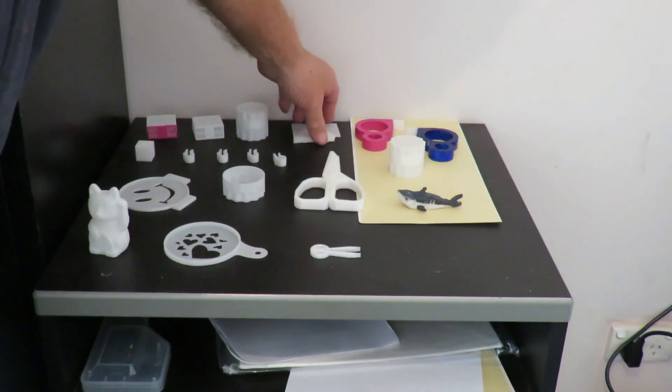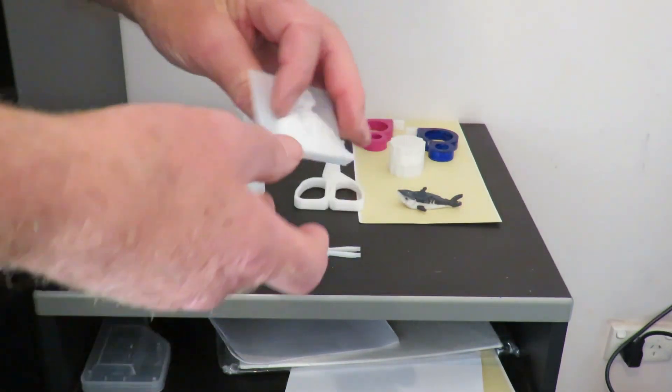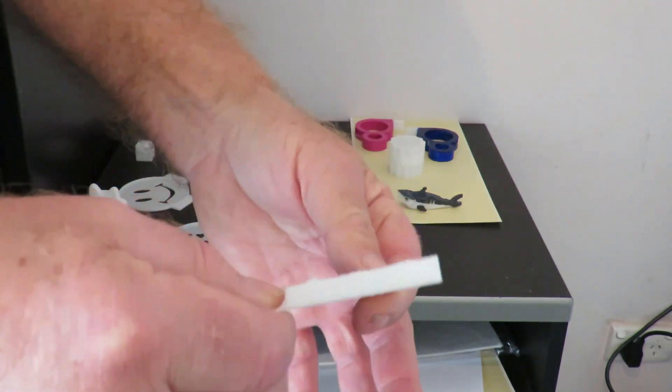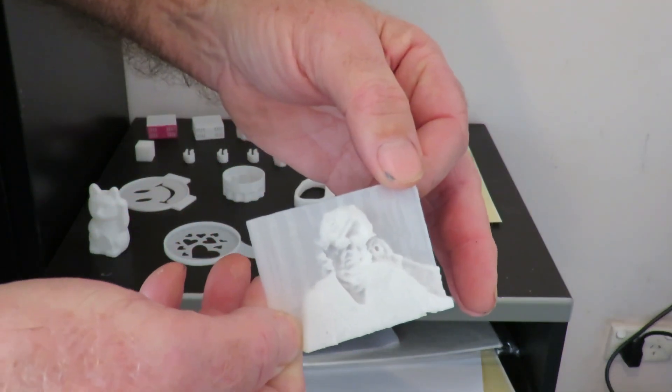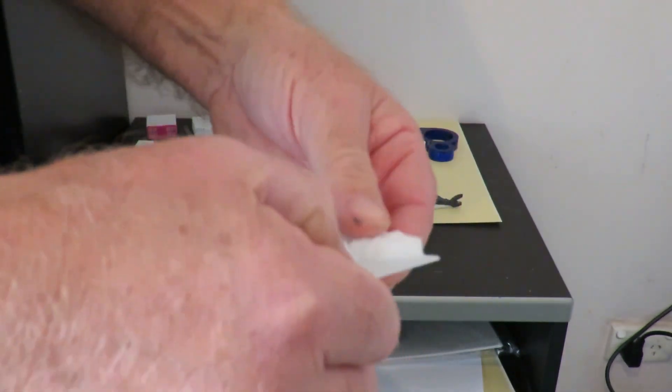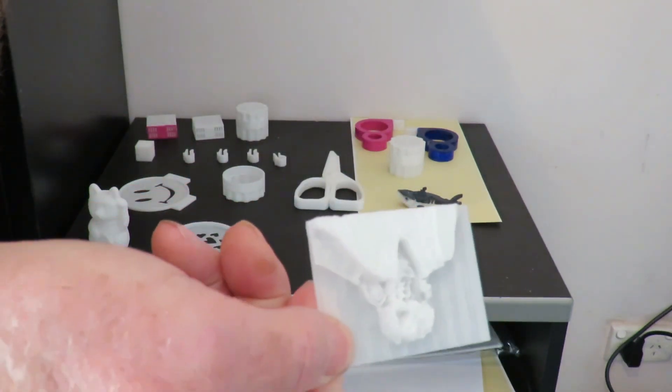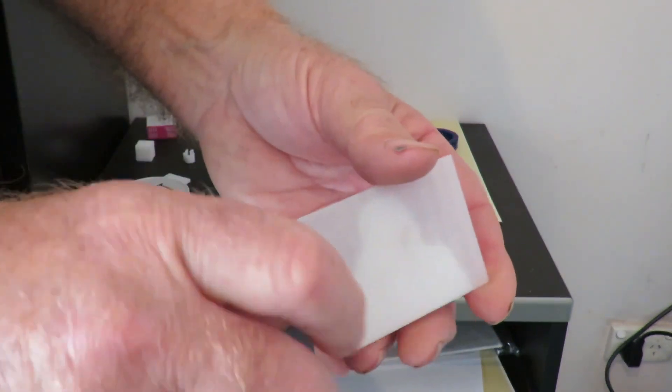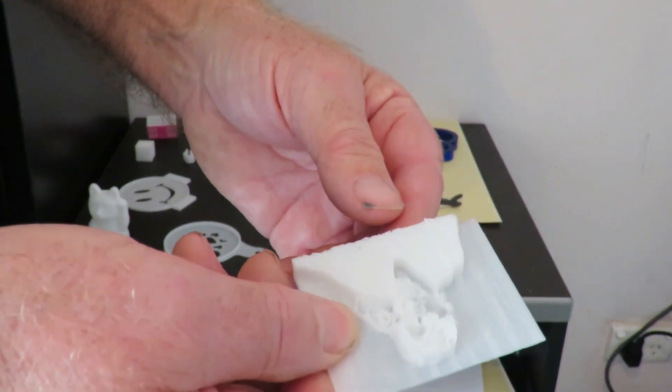One other thing I printed was this. That's a lithophane if you're not certain what they are. And they're quite fascinating. You sort of see the height there. I'll set the camera up in a slightly different angle so you can actually see what it does.